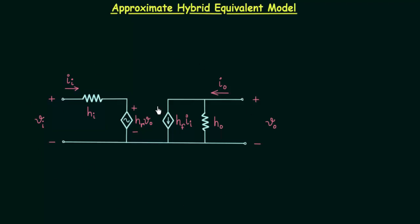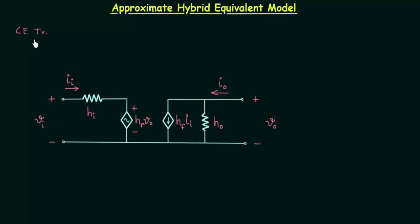You can see the hybrid model on your screen. In this circuit, vi is the input voltage, vo is the output voltage, ii is the input current, and io is the output current. hi is the input impedance, ho is the output admittance, hr is the reverse voltage gain, and hf is the forward current gain. These four are the hybrid parameters. hrvo is the voltage dependent voltage source and hfii is the current dependent current source. This is the hybrid equivalent model of the common emitter transistor.